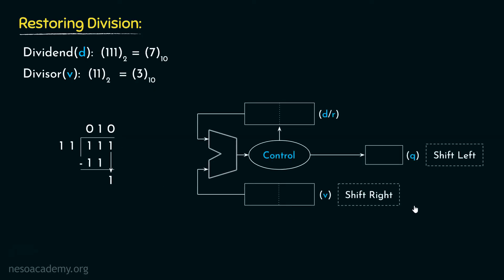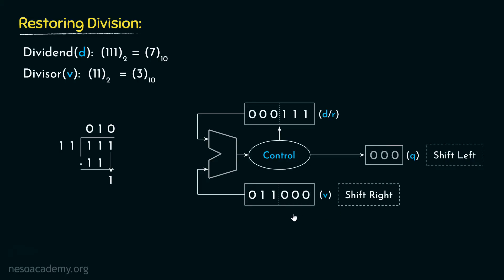Let's now perform this division using our old hardware. In the DR register, we are going to place the dividend in the least significant bit places. In the V register — where we keep the divisor — we place the divisor in the most significant 3 bits. The least significant bit places of the V register, the most significant bit places of the DR register, and the Q register's elements will all be initialized with zeros. The contents of the V and DR registers are 000111 and 011000 respectively. During the first iteration, we shift right the contents of the V register, and observe that V is still larger than the content of the DR register.